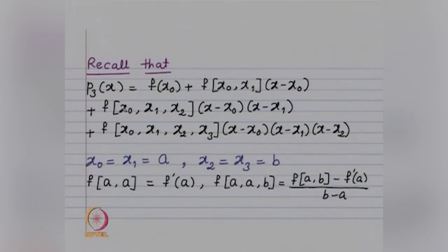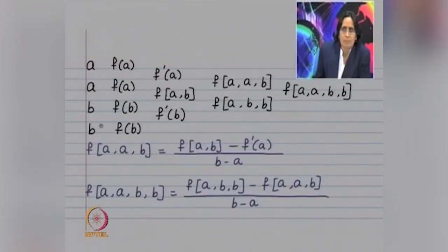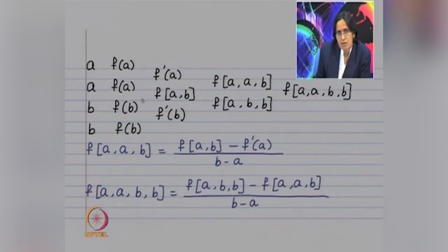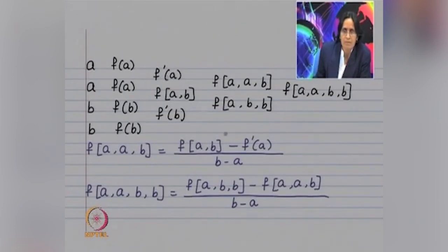Suppose x₀ = x₁ = a and x₂ = x₃ = b. Then [x₀,x₁] = [a,a] = f'(a). The divided difference [a,a,b] = ([a,b] − f'(a))/(b−a), and [a,b,b] = (f'(b) − [a,b])/(b−a). In the divided difference table, with a repeated twice and b repeated twice: the entry for a,a is f'(a); the entry for b,b is f'(b); [a,b] is the usual divided difference; [a,a,b] = ([a,b] − f'(a))/(b−a); and [a,b,b] = (f'(b) − [a,b])/(b−a). So p₃(x) = f(a) + f'(a)(x−a) + [a,a,b](x−a)² + [a,a,b,b](x−a)²(x−b).